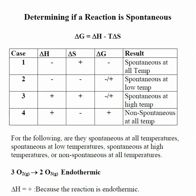One of the things we want to be able to do is estimate the sign on delta G for a given reaction, and we can do this using our chemical intuition. There are going to be four basic cases, and it all is determined by the estimated sign on our enthalpy delta H and our entropy delta S.